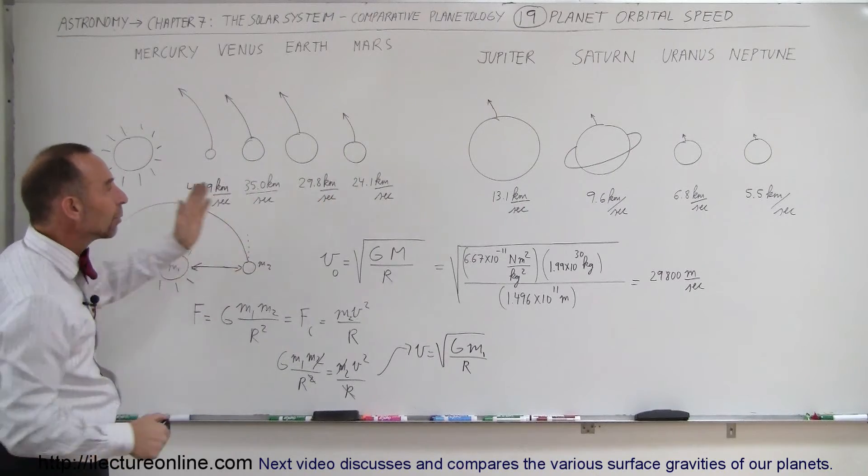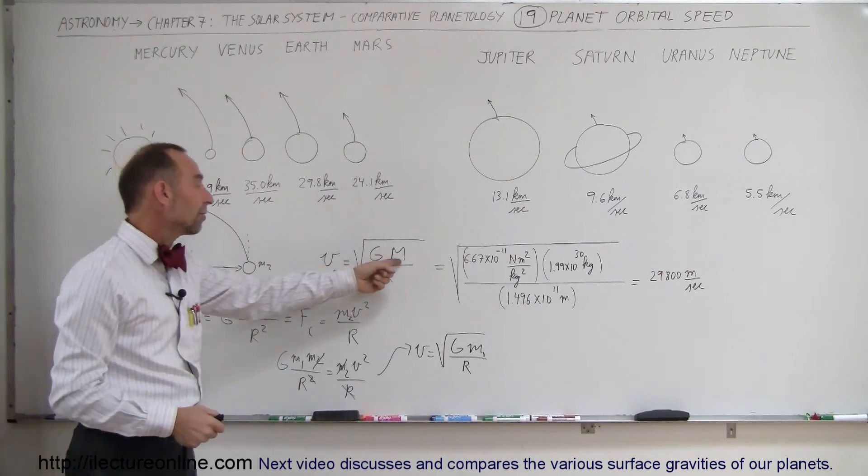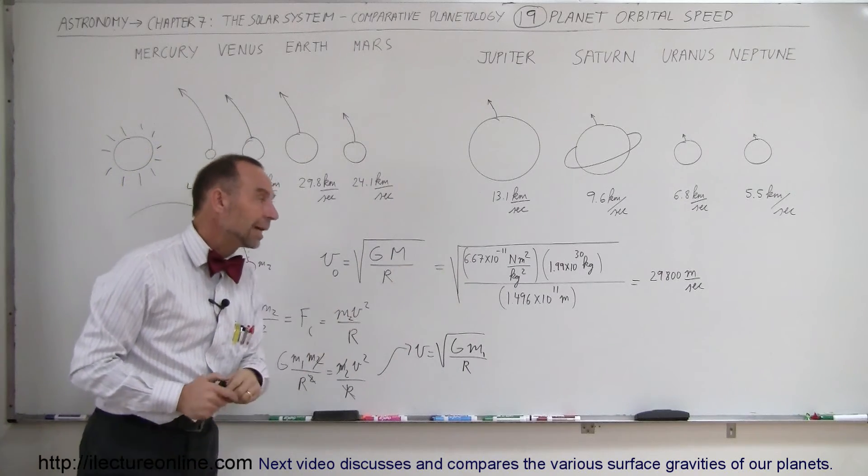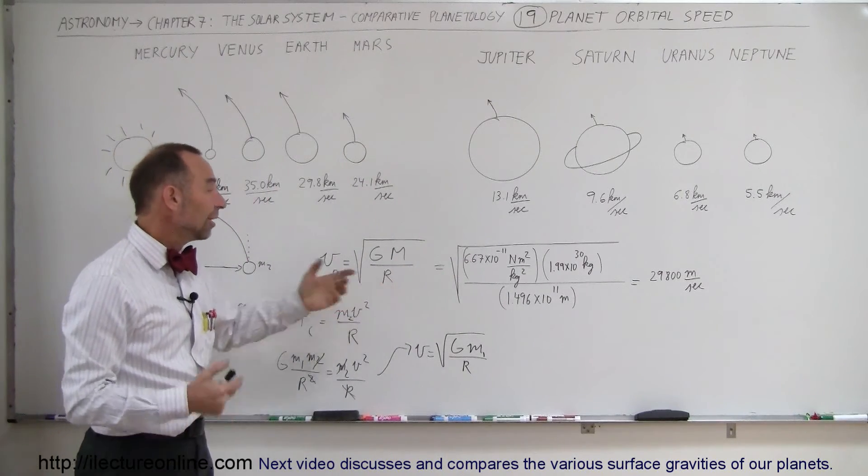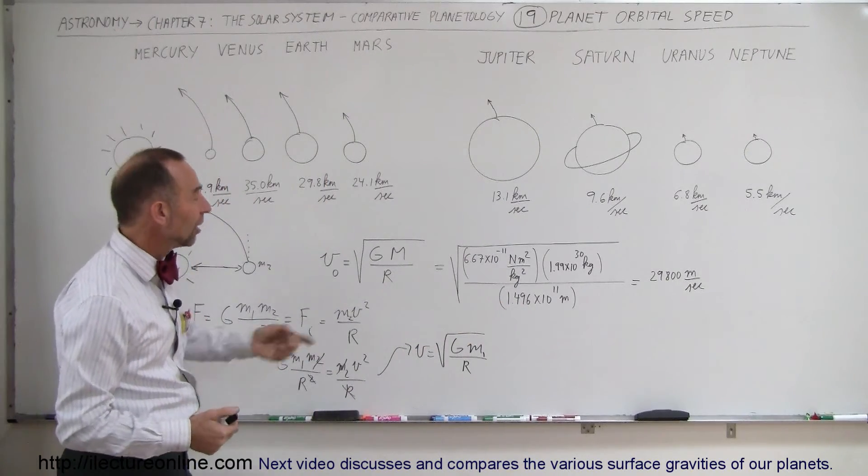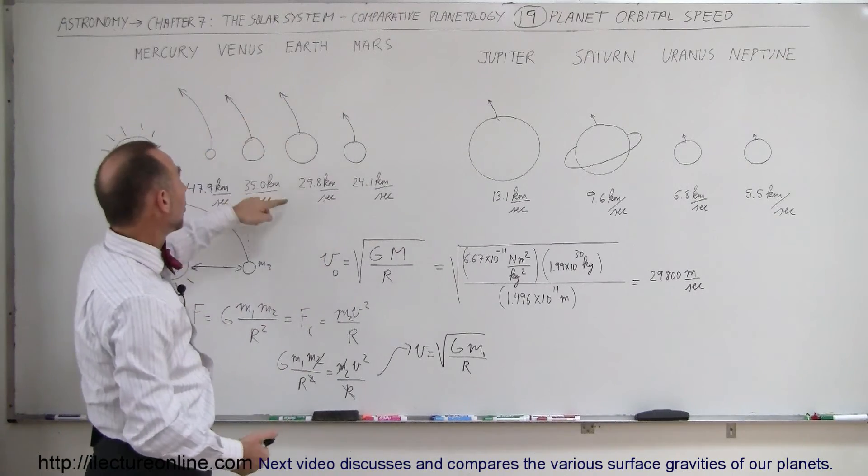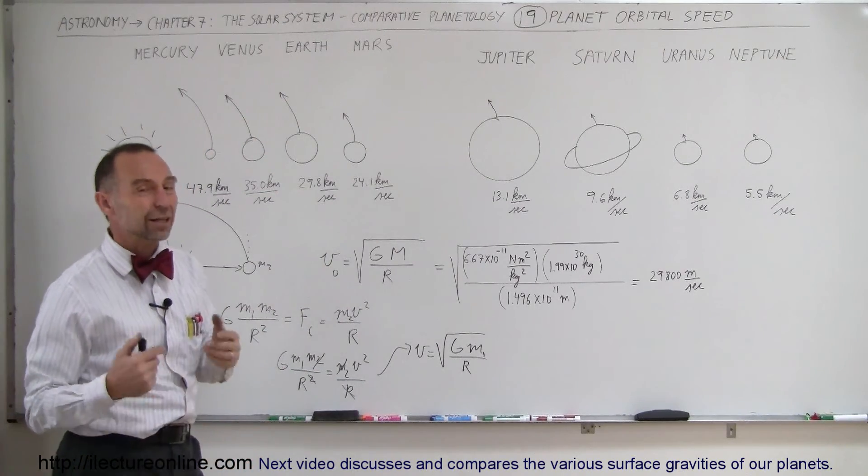And that's how we can then calculate what these speeds are, simply by plugging in the mass of the sun, which is 1.99 times 10 to the 30 kilogram, and the distance, in this case, I used an example, the distance from the earth to the sun in meters, used a gravitational constant, we can calculate the number that we got here at 29.8 kilometers per second.